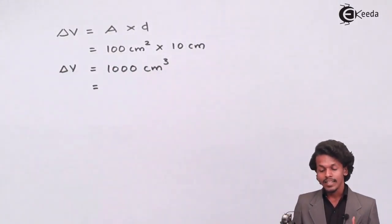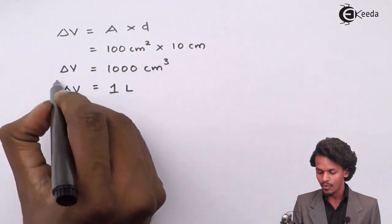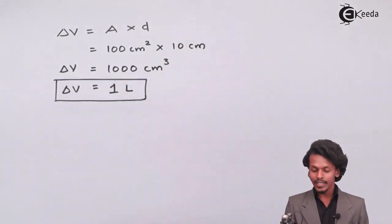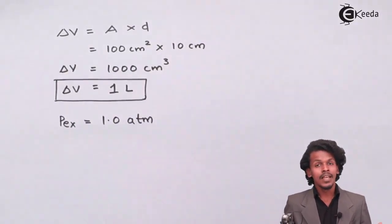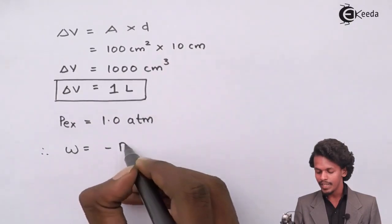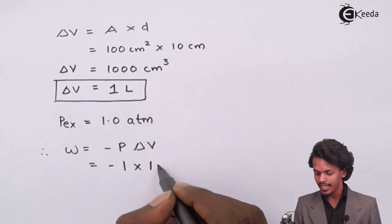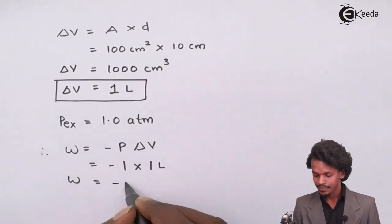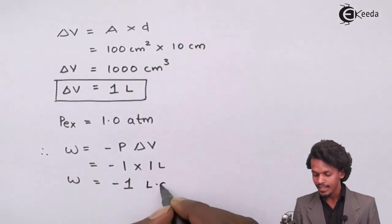Now, 1000 cm³ is equal to 1 litre, so ΔV = 1 litre (or 1 dm³). The external pressure is P_ex = 1.0 atmosphere. Therefore, W = −P × ΔV = −1 × 1 = −1 litre·atmosphere.